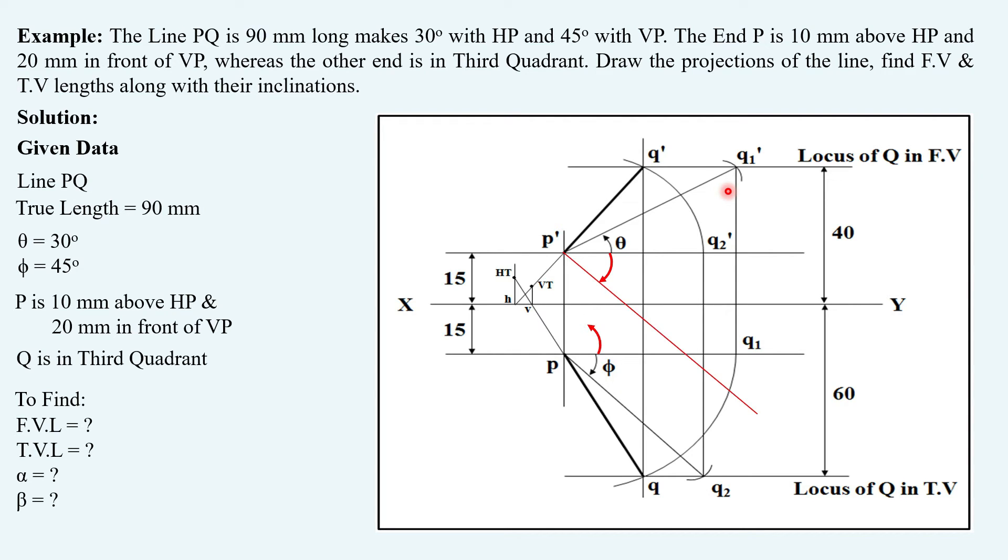So you have to take the two lengths like this. You will get the front view locus here below XY and the top view locus on this line above XY. Let's draw the solution.